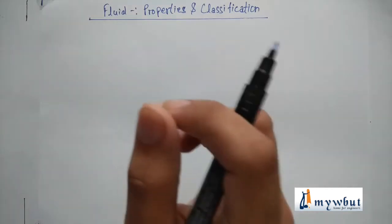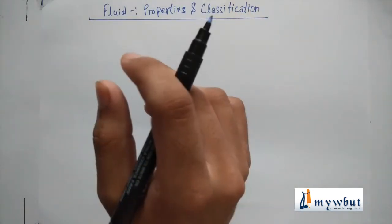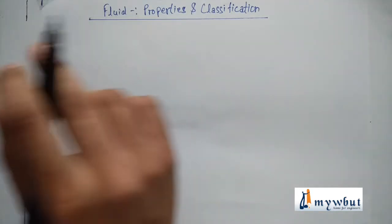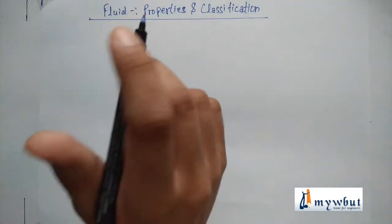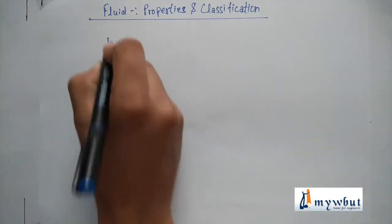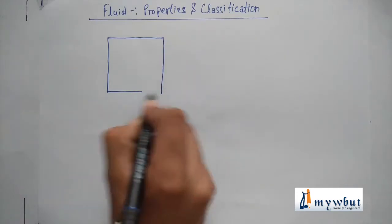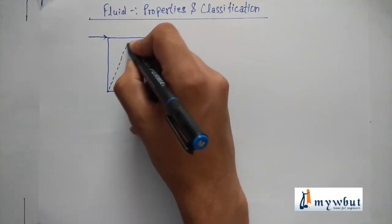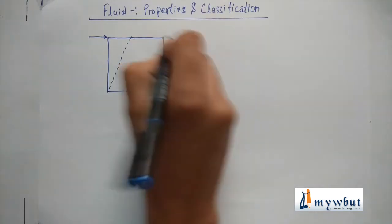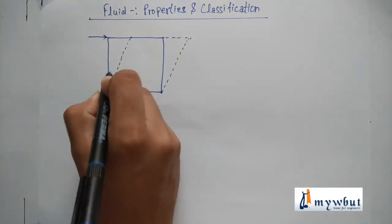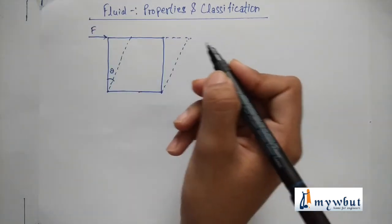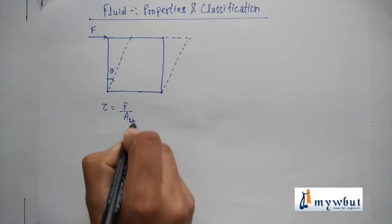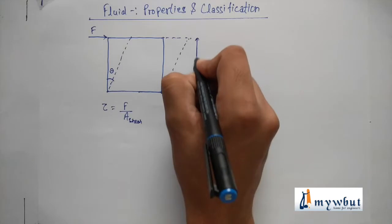There must be some relation between shear force and fluid properties like velocity and distance. As fluid deforms continuously under the action of shear force, when the fluid is flowing it experiences some resistance. If we consider a fluid element and a shear force is applied, it will deform. Let this angle be theta. Shear stress is defined as force divided by shear area.